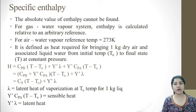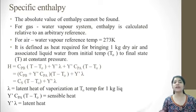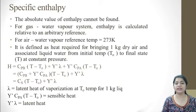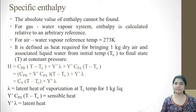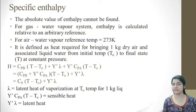First of all, about your liquid, vapor and gas system. The absolute value of enthalpy cannot be found. Thermodynamic properties like internal energy and specific enthalpy are all calculated with respect to a certain reference. Here, for the gas and water vapor system, you calculate enthalpy relative to a reference temperature. For an air-water vapor system, the reference temperature is 273 Kelvin, that is 0 degrees Celsius.